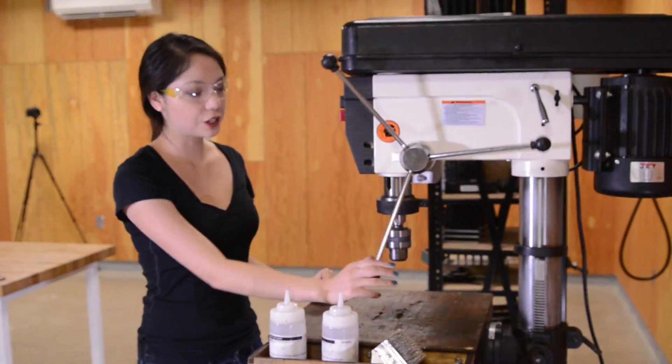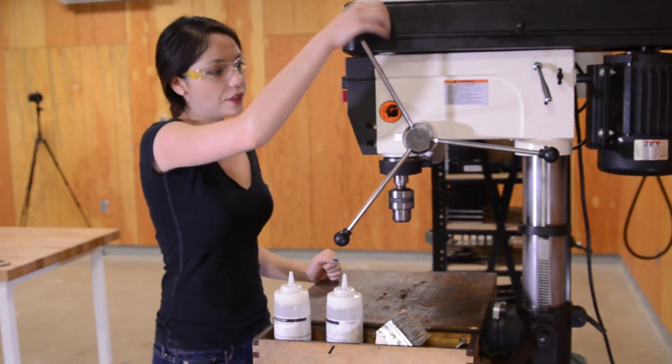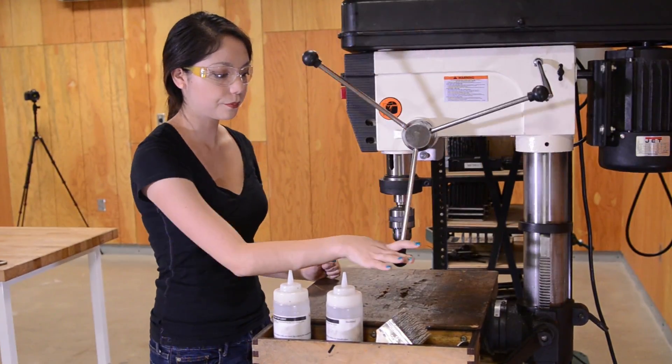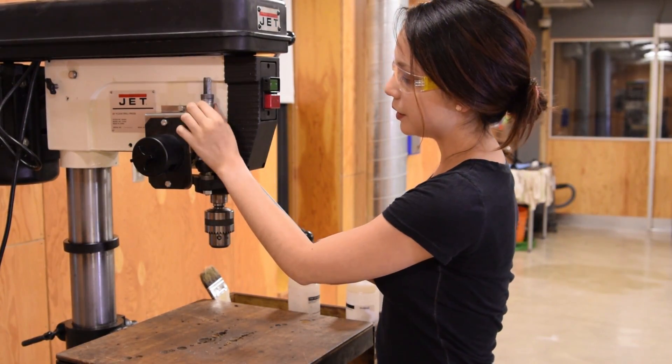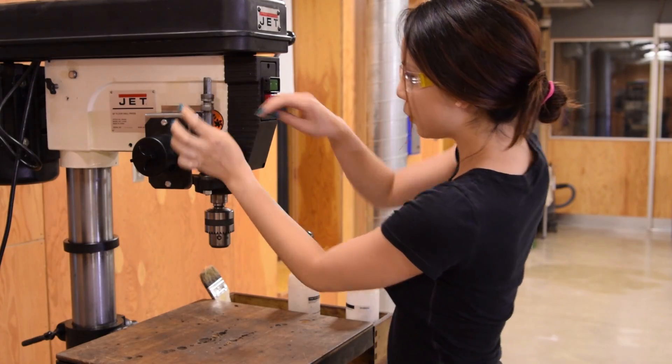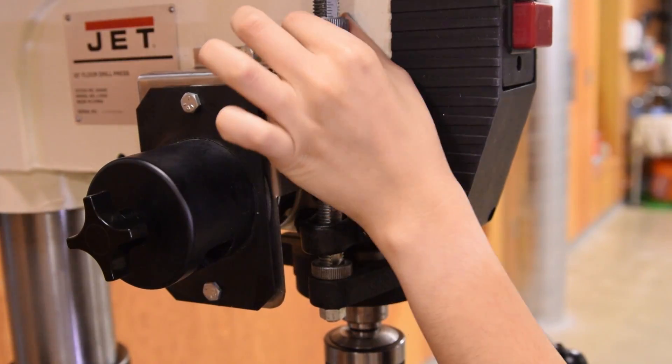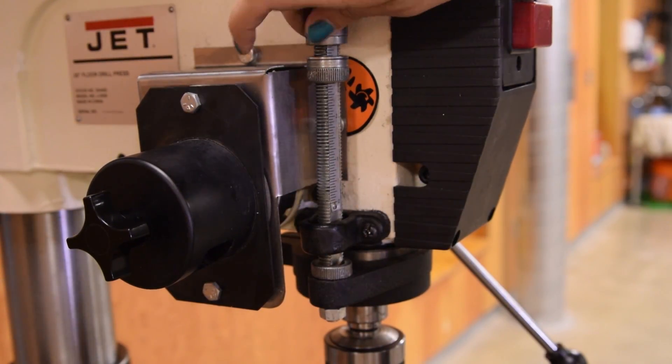And then you have your vertical adjustment here. And this is how you actually do your drilling. One thing you might need to do is set the depth of the cut. So with that, you can use this, and you unscrew one of them, and then chase it down with the other one.